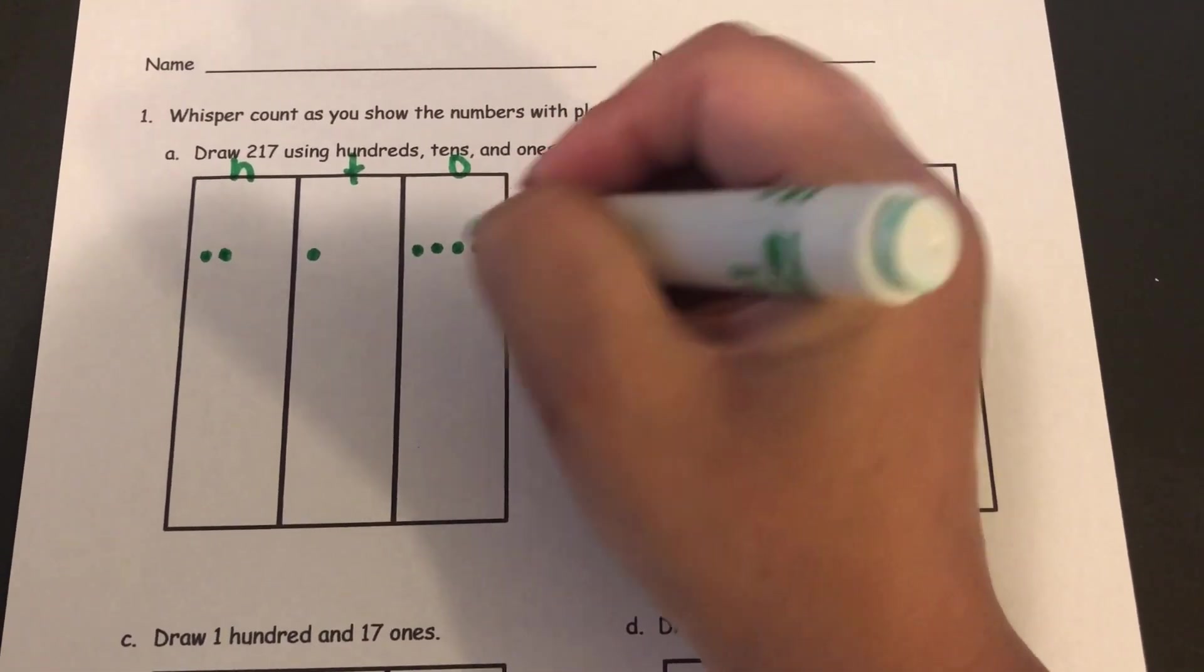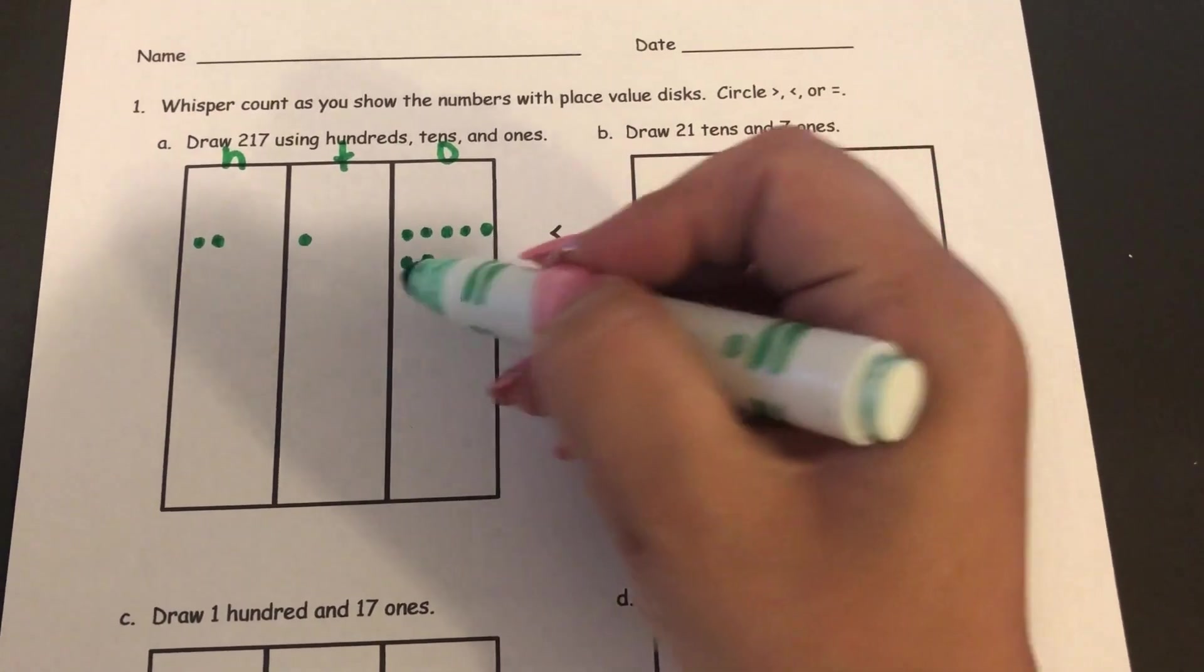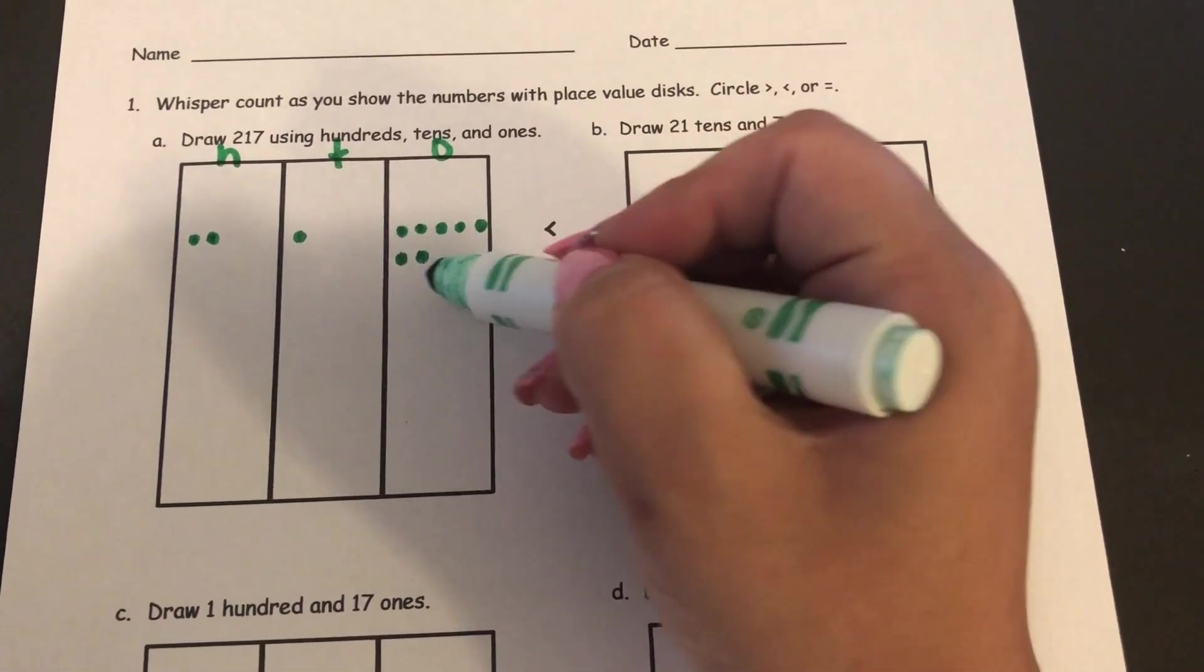And I'm making sure that when I put in my seven ones I show it as a group of five and then two more, because five and two is seven.